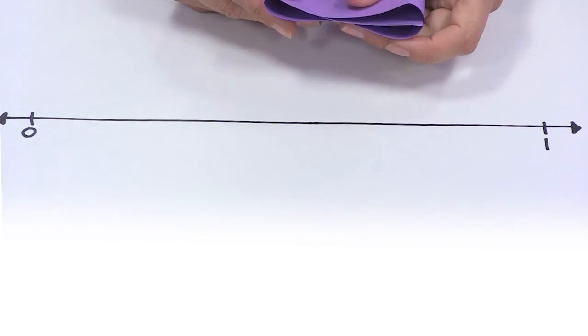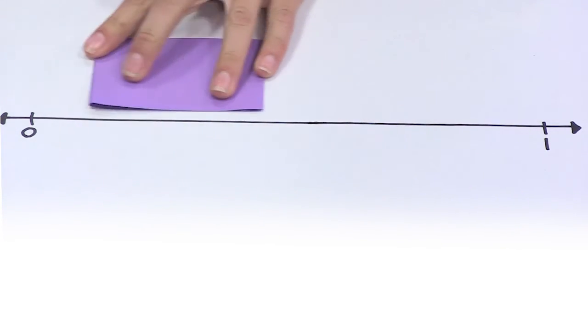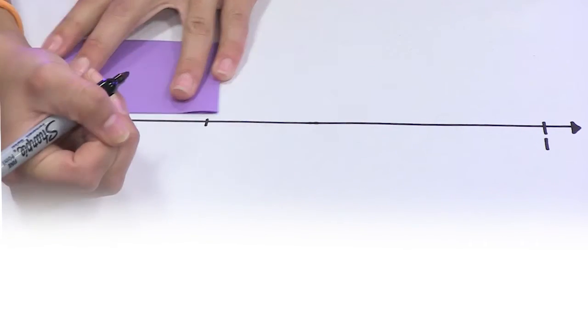For thirds, I do a burrito fold, where I pretend that I am folding a tortilla into a burrito. This isn't always perfect, but it is usually close enough.